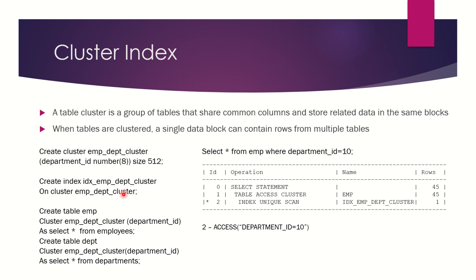Now that I have a cluster index, I need to create two tables as part of the cluster. The first is the EMP table: CREATE TABLE emp CLUSTER emp_department_cluster AS SELECT * FROM employees, sharing the common column department_id. The second cluster table is the Department table: CREATE TABLE department CLUSTER emp_department_cluster AS SELECT * FROM departments. Now I have a cluster index created and two separate cluster tables.